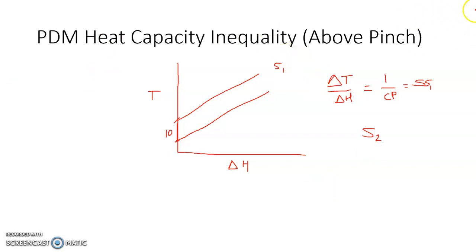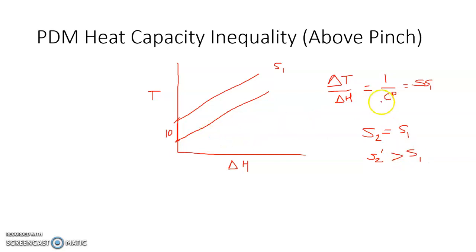Now suppose S2 dash has a heat capacity greater than S1. If CP is greater, then the slope (1/CP) is less, meaning the line tilts more toward horizontal. Starting from the pinch with a delta T of 10 degrees, the two lines diverge as energy is exchanged — the temperature difference increases. The third possibility is S2 double dash with CP less than S1, giving a steeper slope.